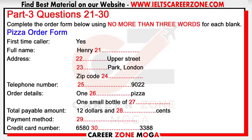Now listen and answer questions 21 to 30. Hello. I'd like to place an order for a pizza, please. Sure, sir. I will take down your details. Are you calling us for the first time? Yes, I've just moved to this neighbourhood. In that case, can I have your full name, please? It's Henry Marcel. Can you please help me with the spelling of your surname, sir?